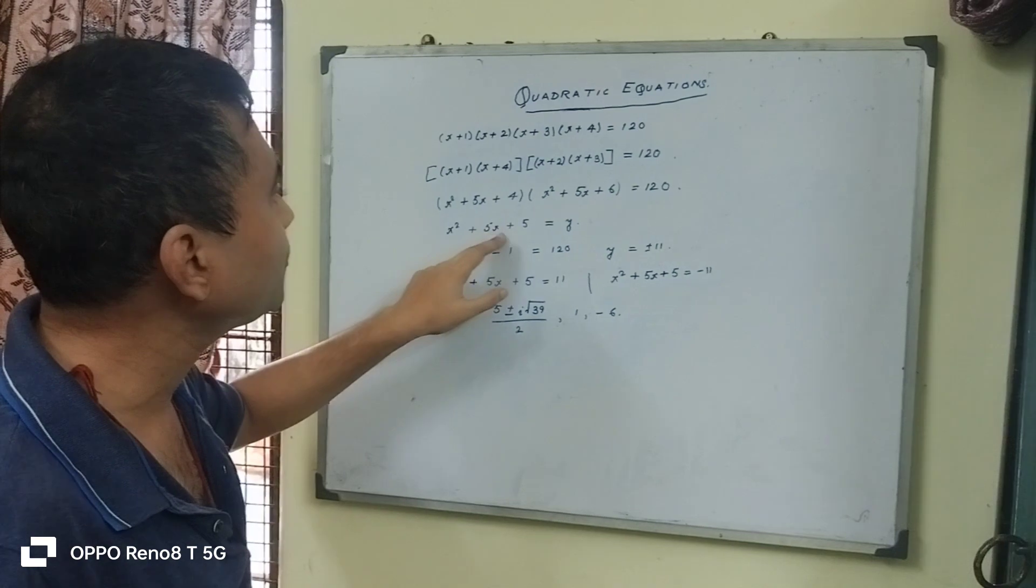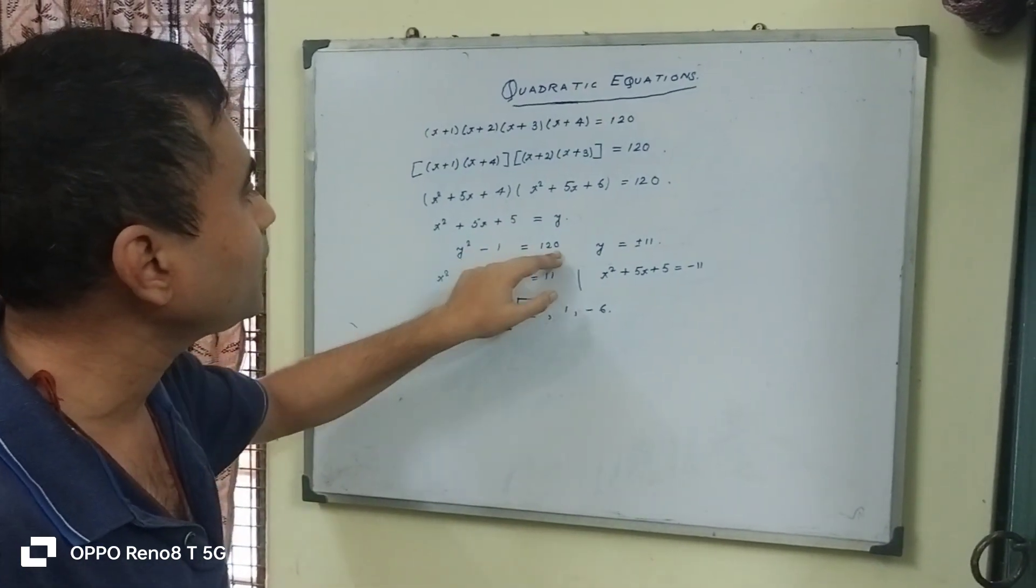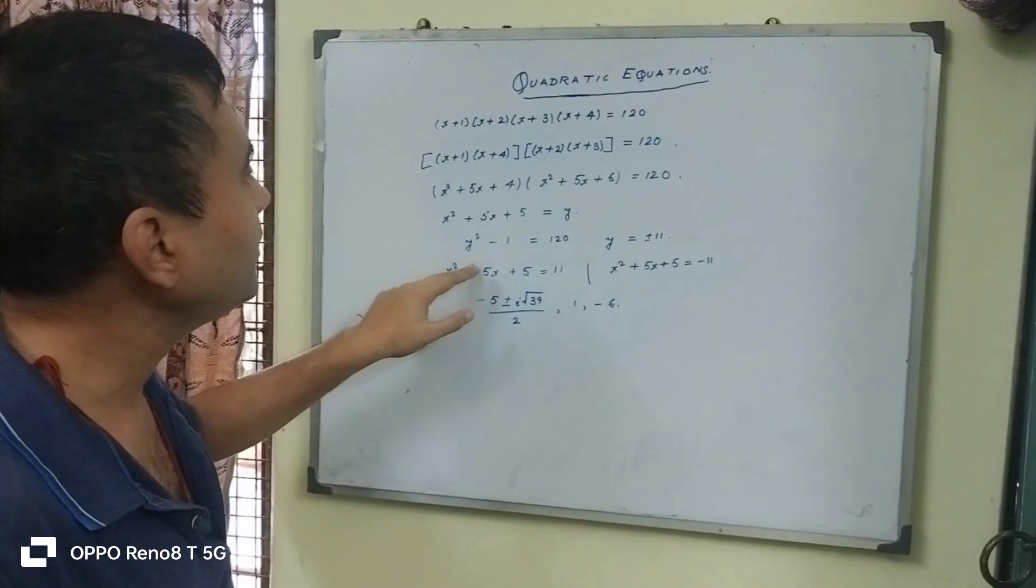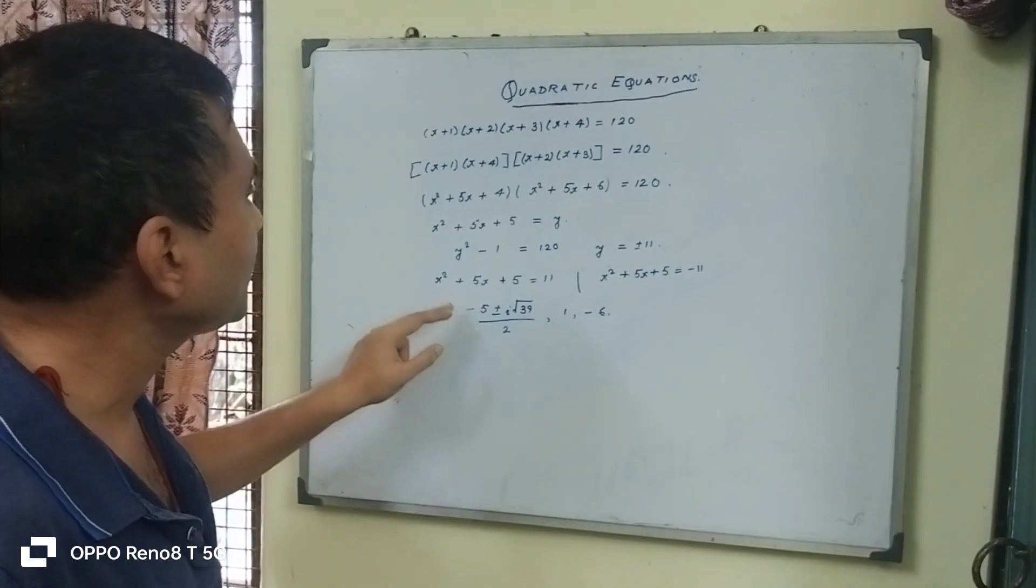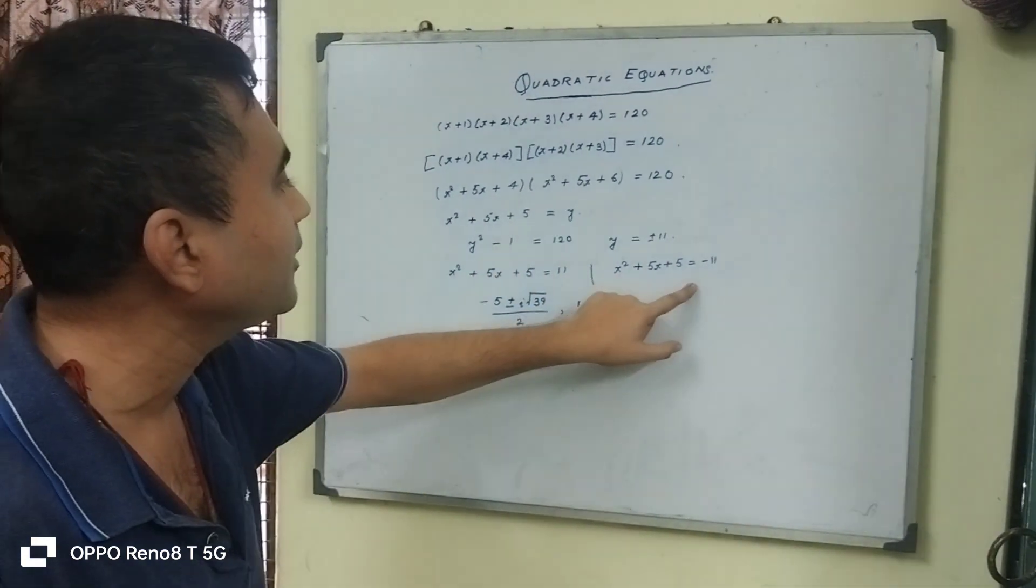So now if I take x square plus 5x plus 5 equals y, then y square minus 1 equals 120, then y equals plus minus 11. So now we have x square plus 5x plus 5 equals 11 or minus 11.